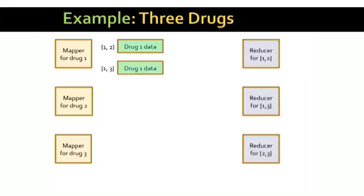In general, the mapper for drug one will produce a much larger number of key value pairs. The number of key value pairs is one less than the number of drugs.